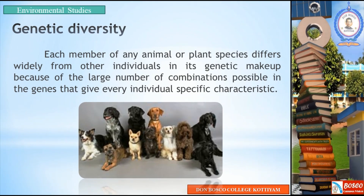The major components of biodiversity are: first, genetic diversity. Each member of any animal or plant species differs widely from other individuals in its genetic makeup, because of the large number of combinations possible in the genes that give every individual specific characteristics. For example, in a dog species, each individual dog shows genetic diversity.